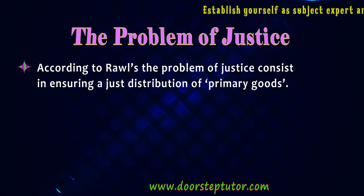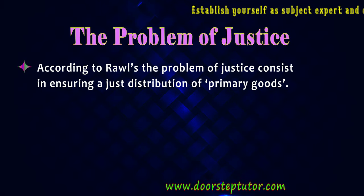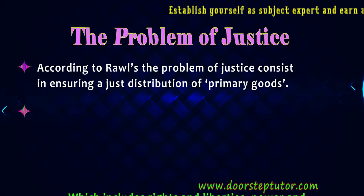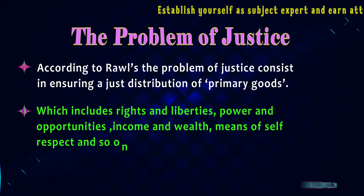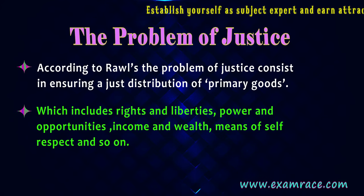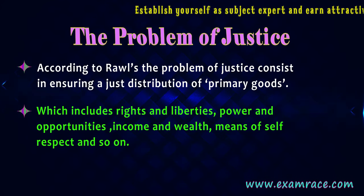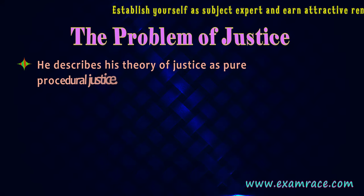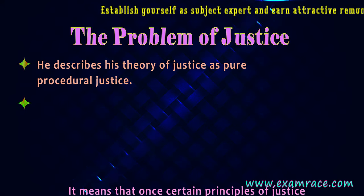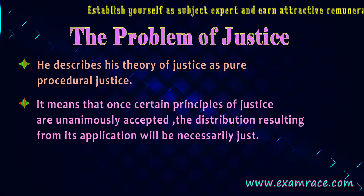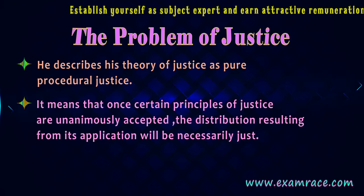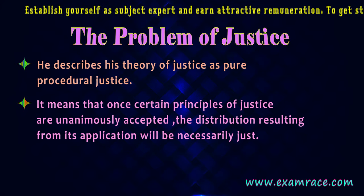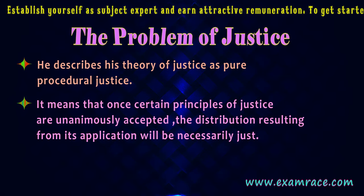The problem of justice: according to Rawls, the problem of justice consists in ensuring a just distribution of primary goods, which includes rights and liberties, power and opportunities, income and wealth, and means of self-respect. He describes his theory of justice as pure procedural justice, which means that once certain principles of justice are unanimously accepted, the distribution resulting from their application will be necessarily just.